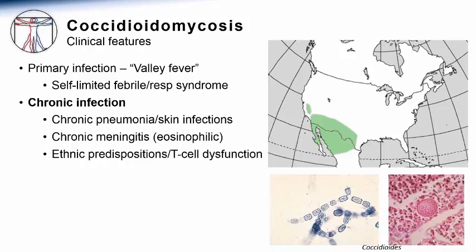However, skin infections and joint infections can also occur. One of the most serious complications of the chronic form of coccidioidomycosis is involvement of the central nervous system, causing a chronic meningitis characterized often by headache and maybe focal neurological symptoms. On lumbar puncture, one of the distinctive features of coccidioides meningitis is that there will be an excessive number of eosinophils in the spinal fluid, one of the few forms of eosinophilic meningitis.